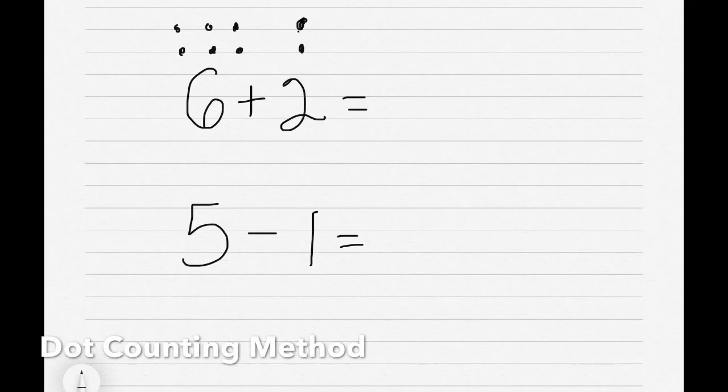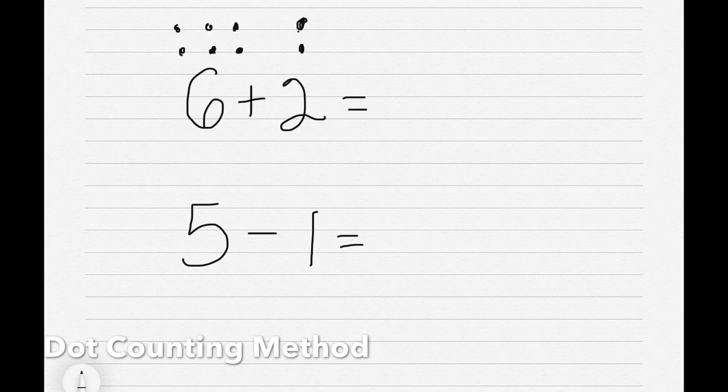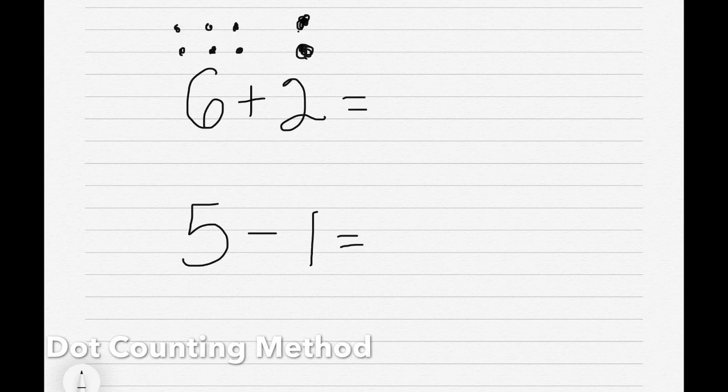We know our first term is 6, so all we need to do is count the two dots afterwards. We say our first term 6, then we do 7, 8, and that would be our answer.